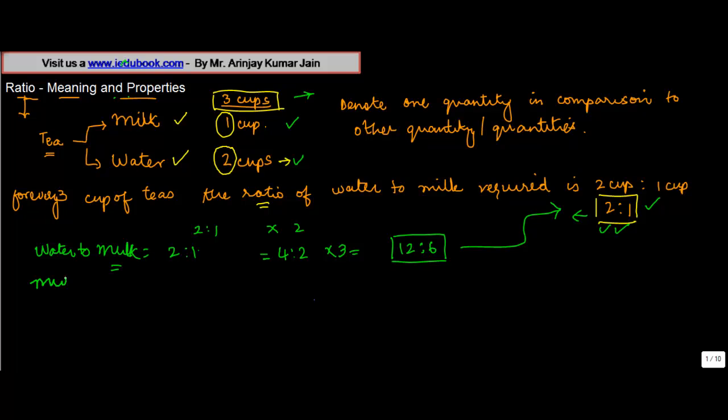So when you say the ratio of water to milk you write it as two is to one, whereas if you were to write it like milk to water you would write one is to two. Now there are certain things when you compute the ratios which are important.